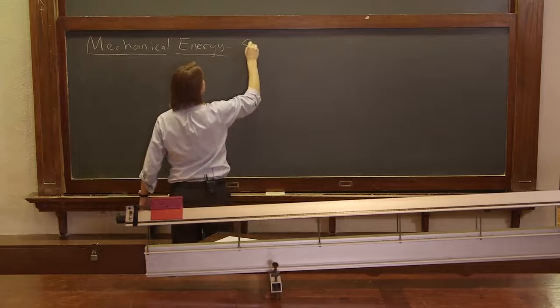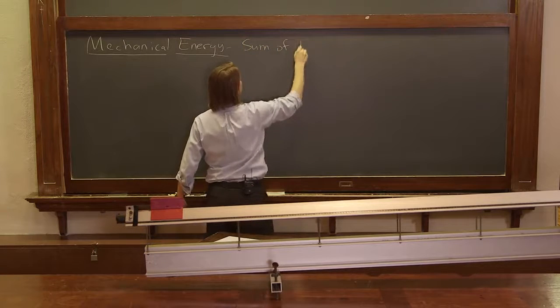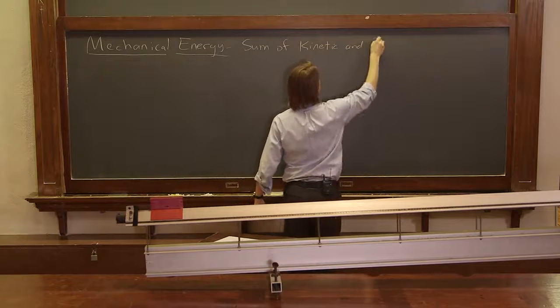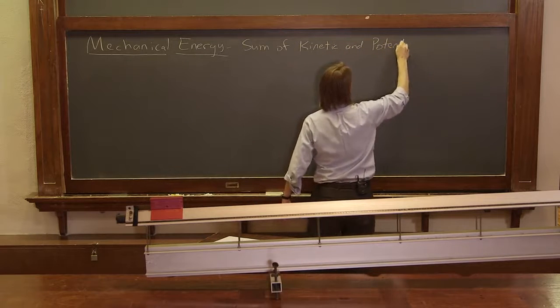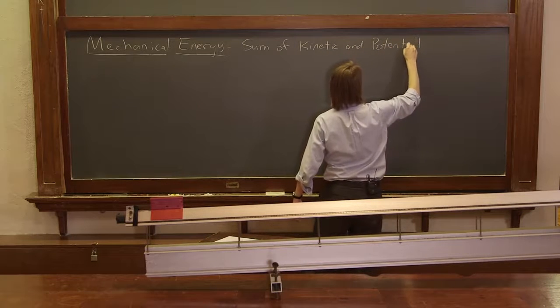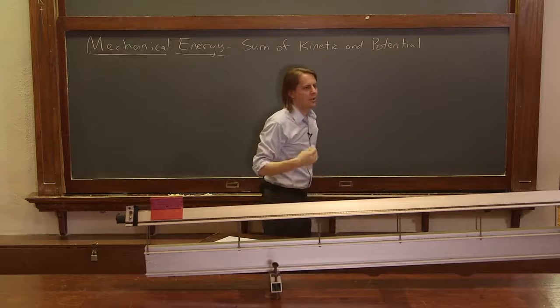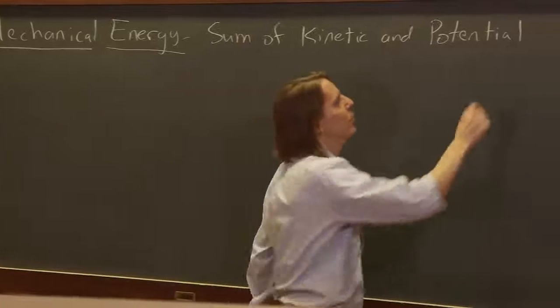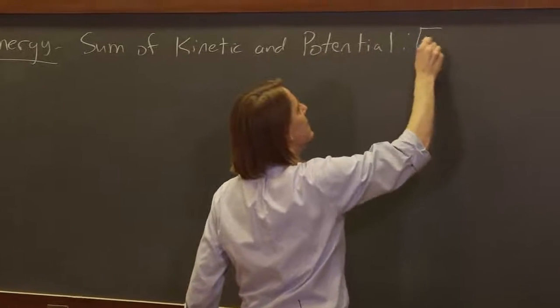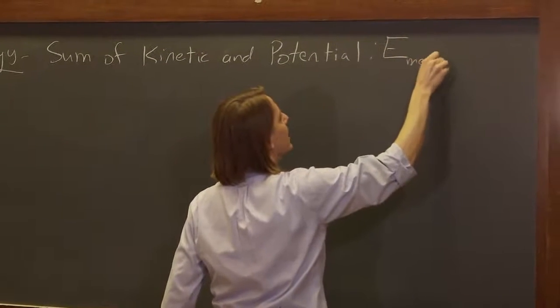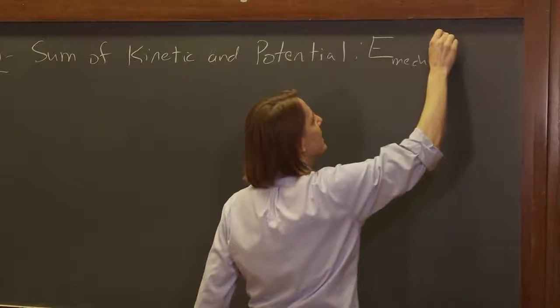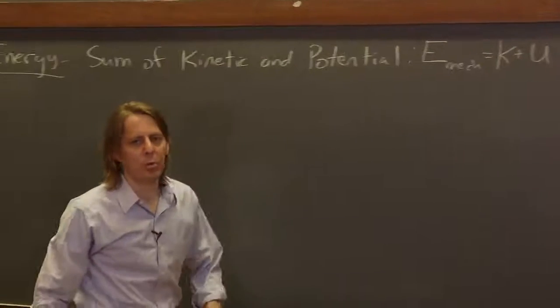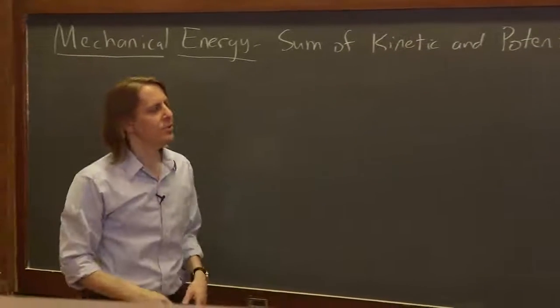Mechanical energy just means the sum of kinetic and potential. And here we just mean the two potentials that we have defined, the gravitational potential and the spring potential. So we'll write this emech for mechanical energy is k plus u. And then later we'll break u into us plus ug.